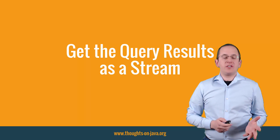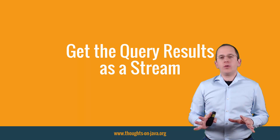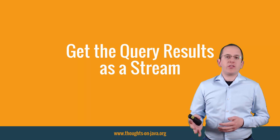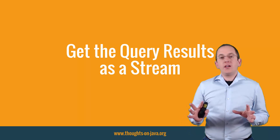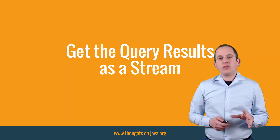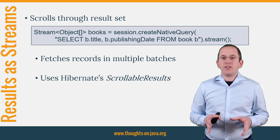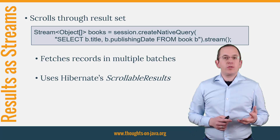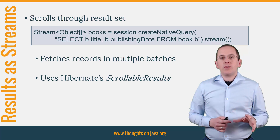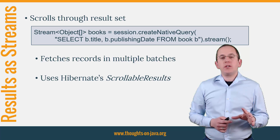Let's take a look at another addition in Hibernate 5: you can now get query results as a stream. Introducing a new method to give you your query result as a stream doesn't sound like a big thing — you could call the stream method of the collection interface to get a stream with your query results. But the new stream method of Hibernate's query interface provides an additional benefit that makes it especially interesting for huge result sets. It fetches the result set in multiple batches and uses Hibernate's scrollable results implementation to scroll through it. This approach is a great fit if you use a stream to process the result set records one by one and helps you implement your use cases.